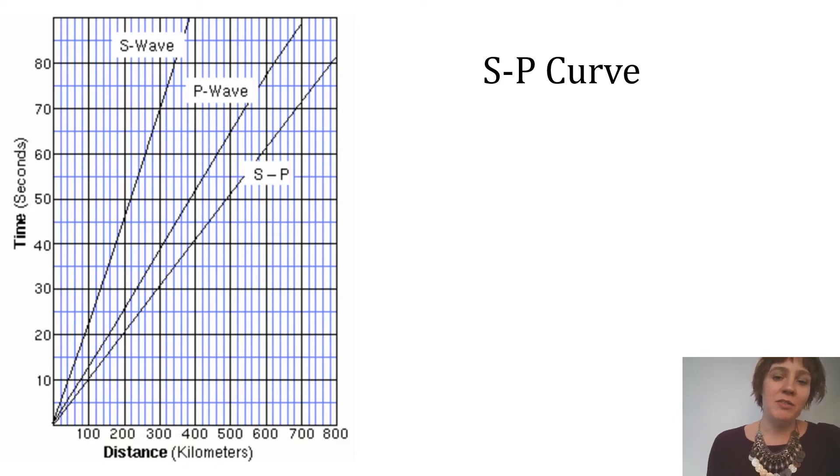However, another way of accomplishing the same feat is to actually graph the S minus P time. Because if you take the value of the travel time of the S wave, say here, and you subtract the time of the P wave in the same location, then you will have some numbers. So in this case, it's 10, 20, 30 seconds time difference.